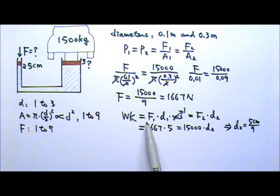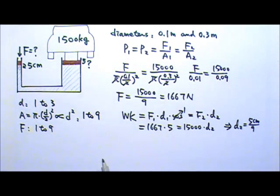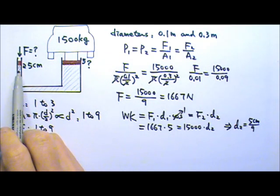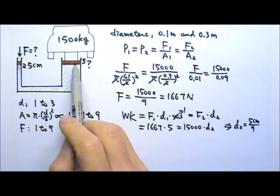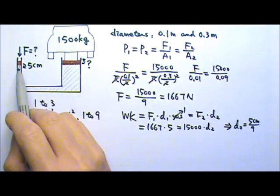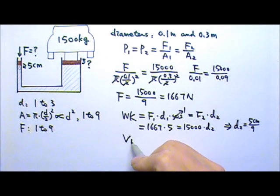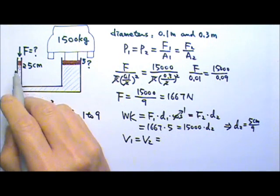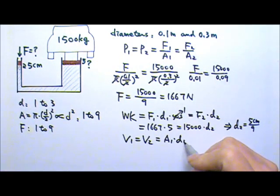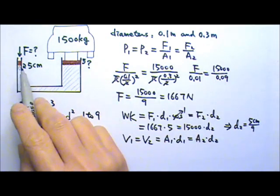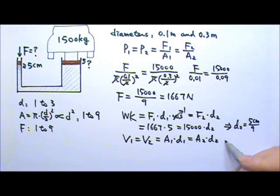So if we use a simple machine to save force, we have to travel a longer distance, and the car doesn't go up as much. Another way to solve this: when the small piston goes down, a volume of fluid gets displaced, and the other piston goes up by an equal volume. So the volume on both sides must be equal. The volume of a cylinder equals cross-sectional area times height, so area 1 times displacement 1 equals area 2 times displacement 2. Plugging in the areas and 5 centimeters gives the same d2.